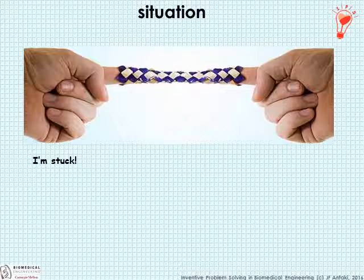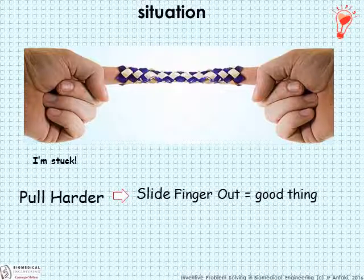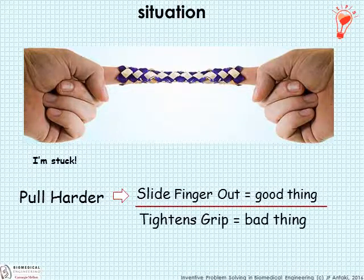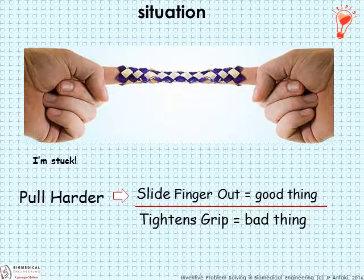You want to get unstuck from this finger trap. Naturally, the inclination is to pull your fingers apart. If this were not a Chinese finger trap, that would solve the problem — you would slide your fingers out. But because of the construction of this braid, the harder you pull, the tighter it gets. That's a bad thing. So this action of pulling yields both a good thing and a bad thing that cancel one another out, and now we have a contradiction.